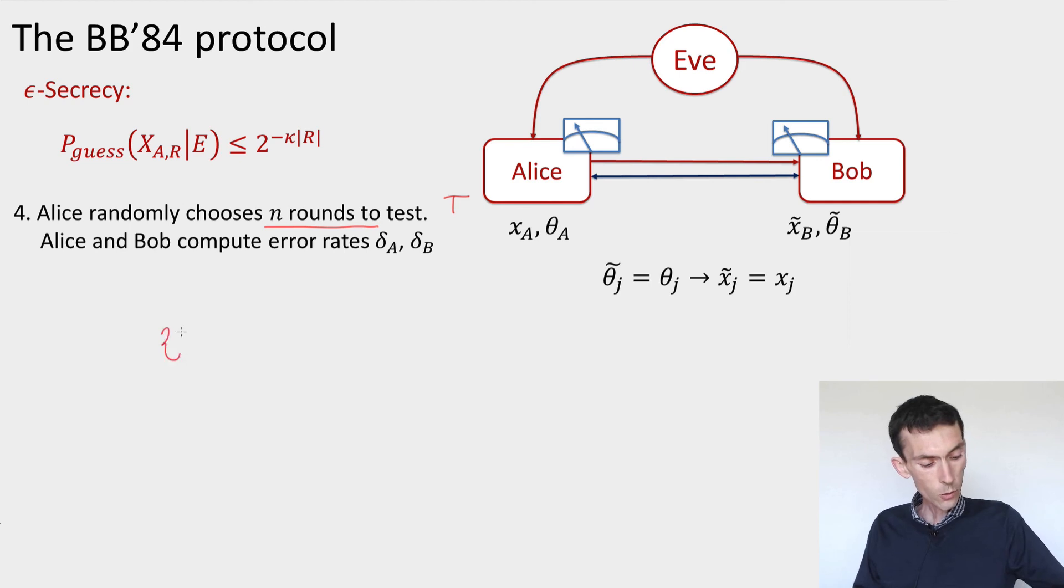What you can show is that the guessing probability is going to be equal to 2^(-κ'r), where κ' is similar to what we had before but a little bit weaker, so it's approximately 0.23 minus the binary entropy function applied to this error rate δ_A. You can learn more about how this is proved in the lecture notes.